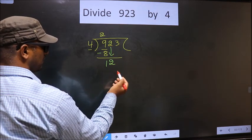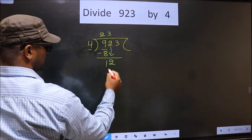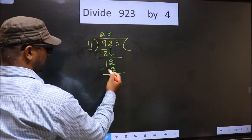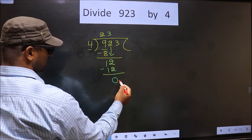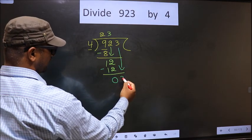Now here we have 12. When do we get 12 in 4 table? 4 3's, 12. Now you subtract. 12 minus 12, 0. Now you bring down the beside number. So 3 down.